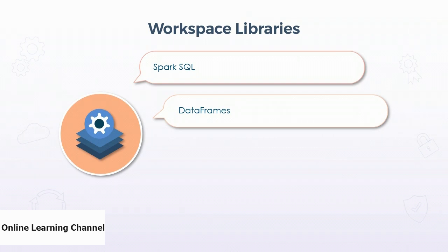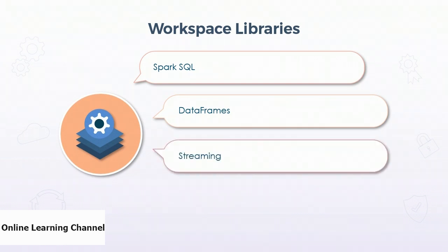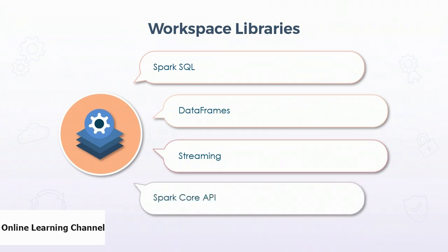There are workspace libraries for managing streaming data as well. For example, memory streams can be created from many different possible data sources, and then transformed and written out or visualized with charts. Databricks is a layer on top of Apache Spark in the cloud, and the heart of Apache Spark is the Spark core API. All core Spark functionality is exposed via this API. It natively supports languages such as R, Python, SQL, Scala, and Java.